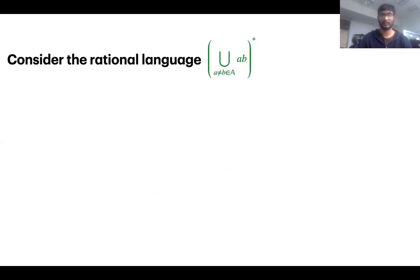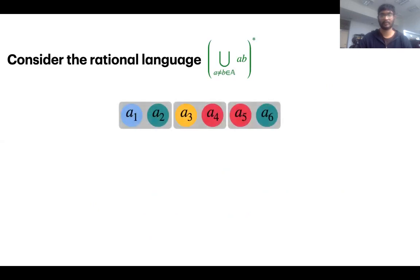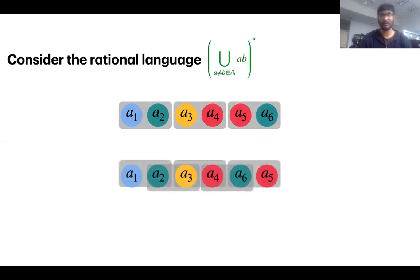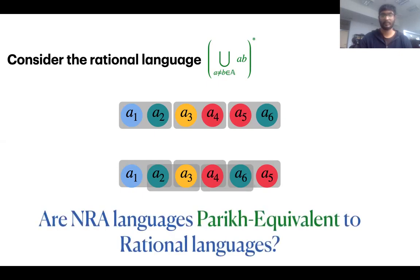Consider the following language: pairs of two atoms arranged in blocks. If we swap A5 and A6, we get a word where consecutive two atoms are different. In fact, for any word in this language, we can show that it can be rearranged to a word with the property that consecutive two letters are different. So this language is Parikh equivalent to the language where consecutive two letters are different. This raises the question whether this property holds for all non-deterministic register automata — specifically, whether non-deterministic register automata languages are Parikh equivalent to some rational language.